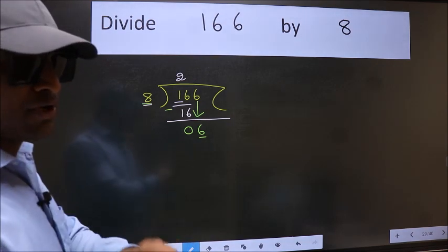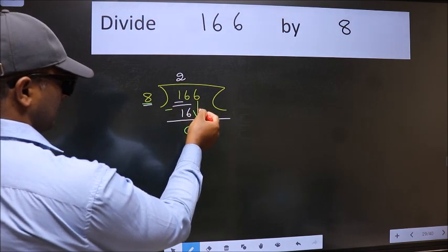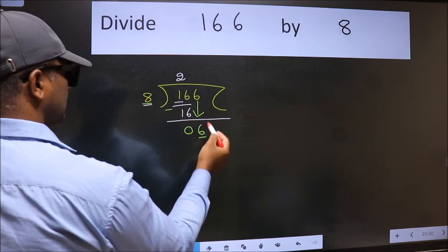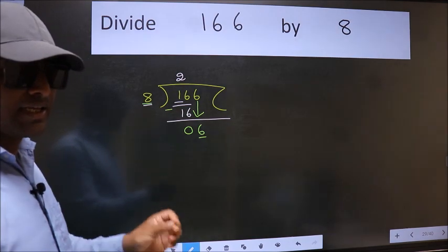Why is it wrong? Because just now you brought this number down, and in the same step, you want to put dot, take 0. Which is wrong.